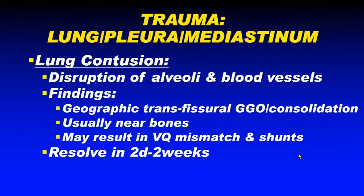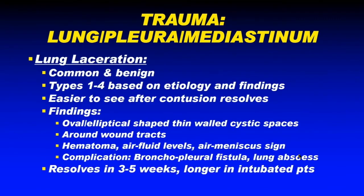Regarding lung and pleural/mediastinal trauma: lung contusion is disruption of alveoli and blood vessels. You may see transfissural ground glass attenuation that doesn't obey natural boundaries, and these are usually seen near bones. You may even see V/Q mismatch and shunt physiology. Contusions take about two days to two weeks to go away. Lung laceration, on the other hand, takes even longer — maybe a month or two — characterized by oval and elliptical thin-walled cystic spaces that might become superinfected during prolonged hospital stay.